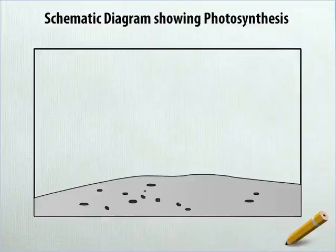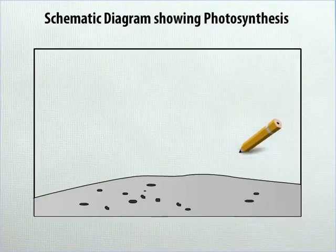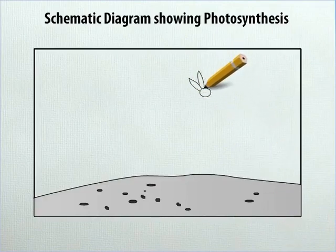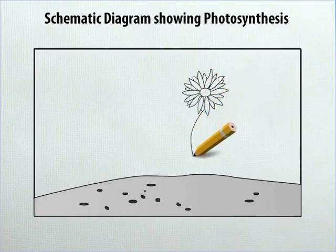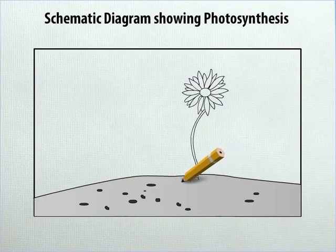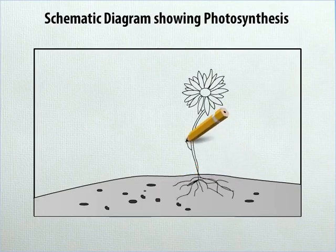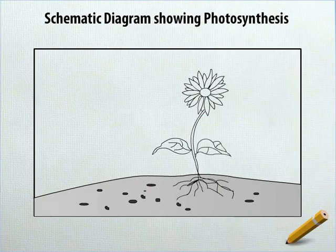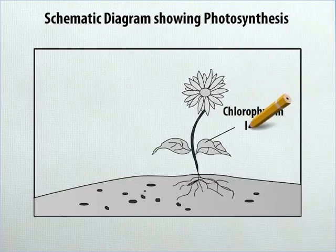On the right-hand side of the sheet, draw in shade a plant with a flower and two leaves. Label the leaf on the right as chlorophyll in leaf.